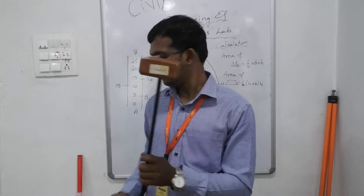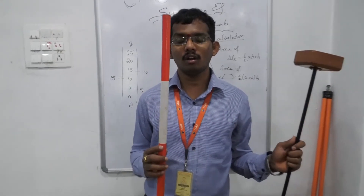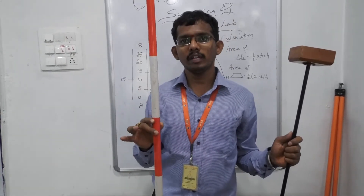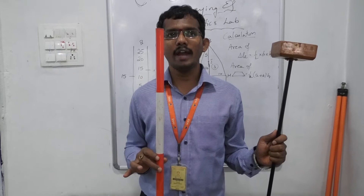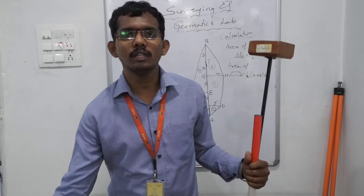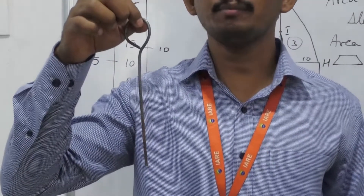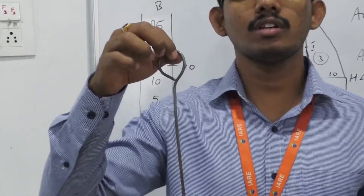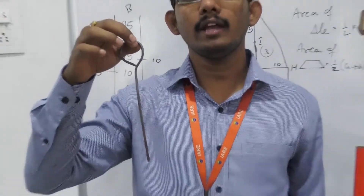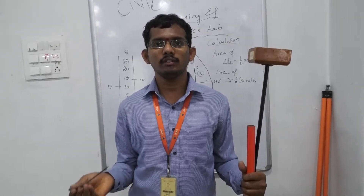Apart from cross-staffs, we also use a ranging rod. This is a ranging rod — a rod of height 3m. Each coloured segment indicates 1m. We have 3 sections making a total height of 3m as per standards. We also use pegs. These pegs are used to mark the position of points on the ground surface. They are made up of mild steel, and are placed at regular intervals where we want to trace points on the ground surface.